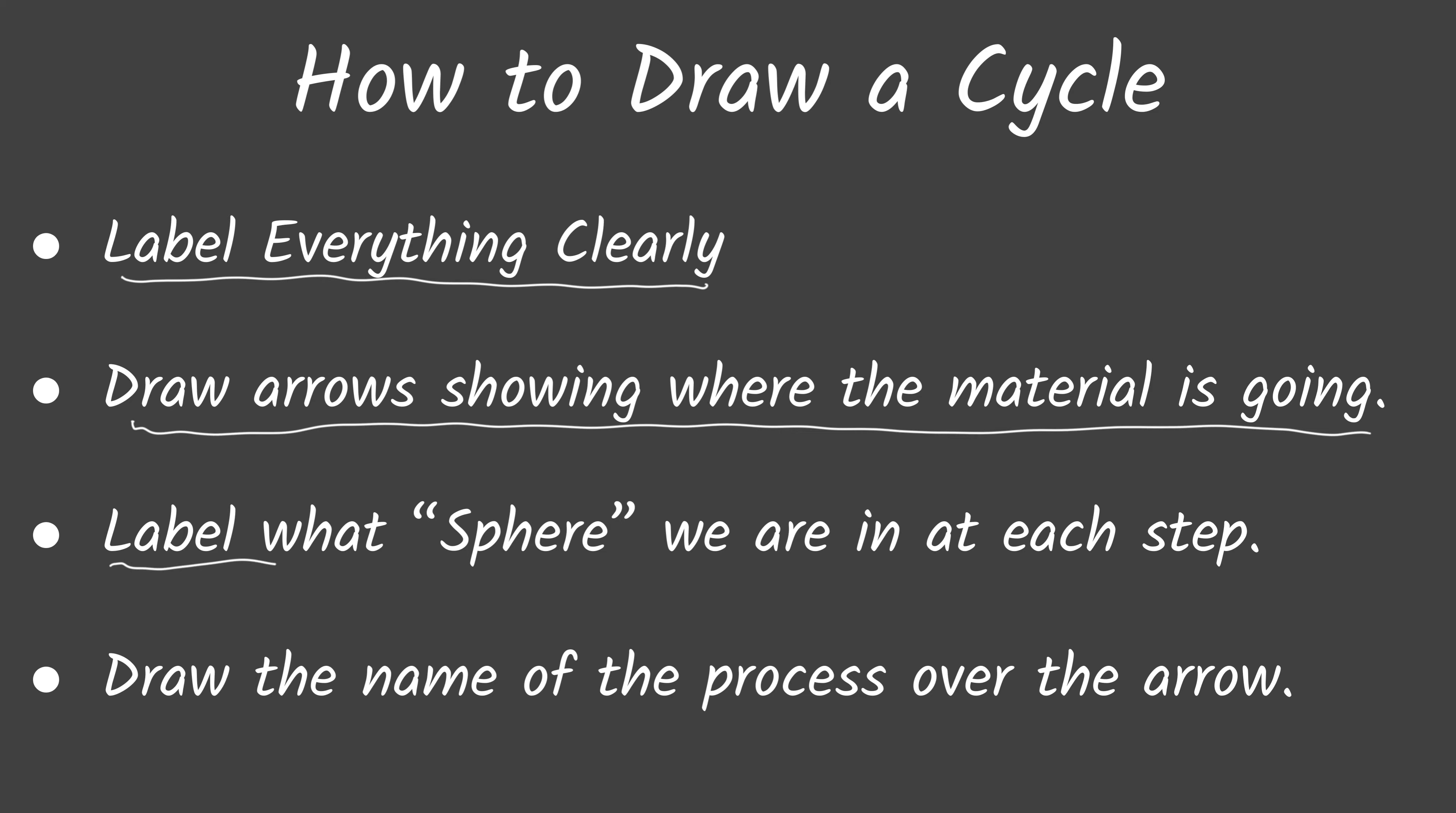You also would label what sphere you are in at each step. Is that the biosphere, the hydrosphere, the geosphere, or the atmosphere? And then over the arrow, you actually draw the name of the process. So that example I mentioned where an animal is eating a plant, carbon is entering that animal. We would draw an arrow going from the plant to the animal, and then we would label that arrow consumption because the process of eating is consumption. Let's look at a couple examples.